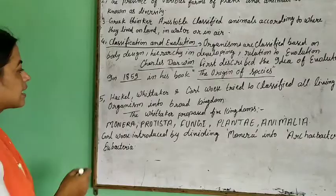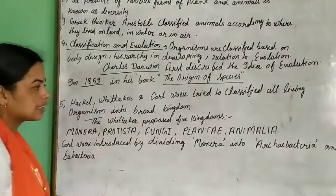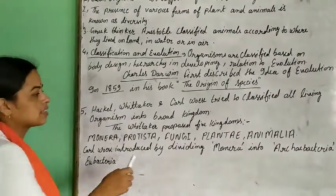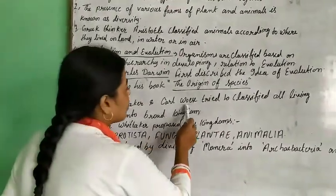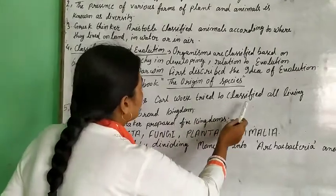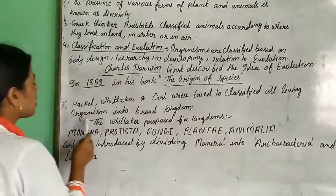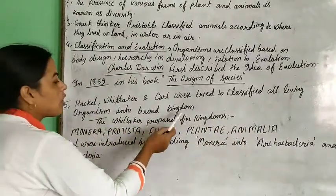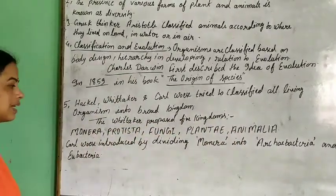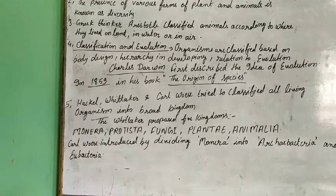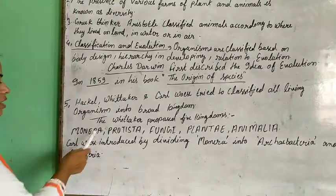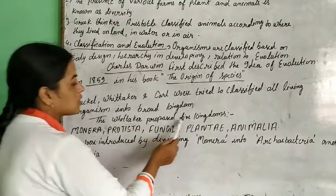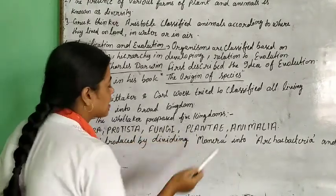Haeckel and Whittaker are also scientists who tried to classify all living organisms into broad kingdoms. Whittaker proposed the five kingdoms.